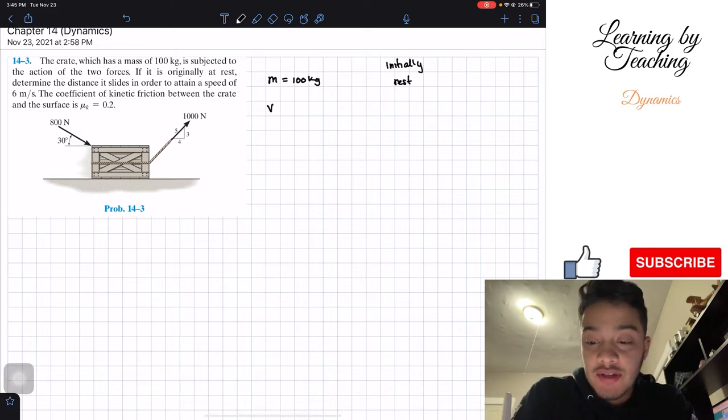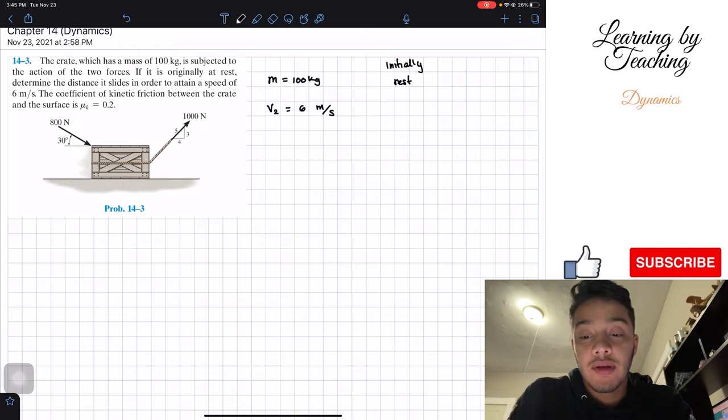Also, we're given the velocity at the end is equal to 6 meters per second, or at least the velocity at which the distance we want to find. And they're also giving us the coefficient of kinetic friction is equal to 0.2.